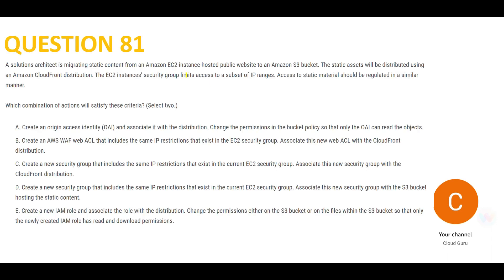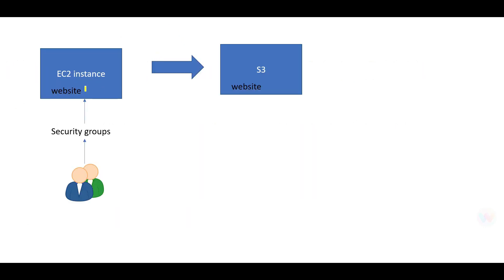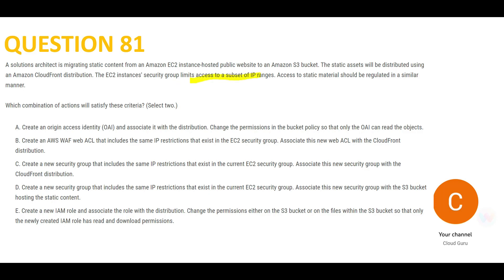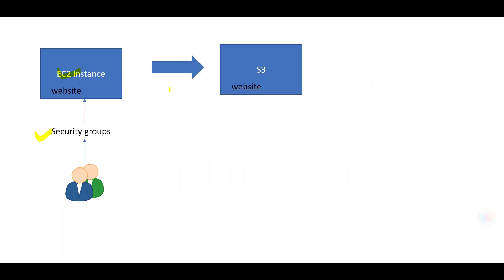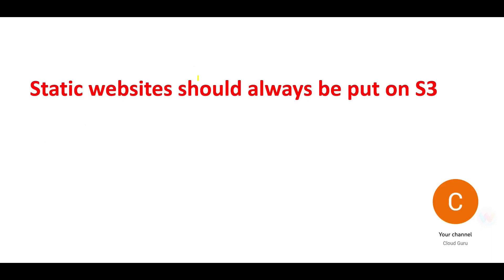Let's look at the next question. You already had a website on an EC2 instance, providing security through security groups to limit access to a subset of IP ranges. Since it is a static website, you are asked to move it to S3. Remember: if you see a static website, always put it on S3 — not EC2 — otherwise you won't be saving money.